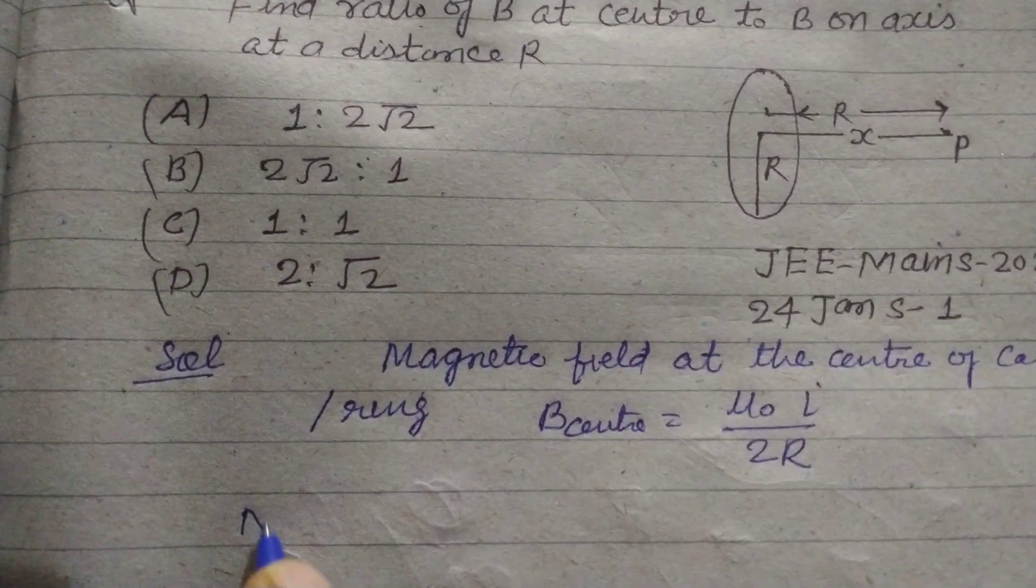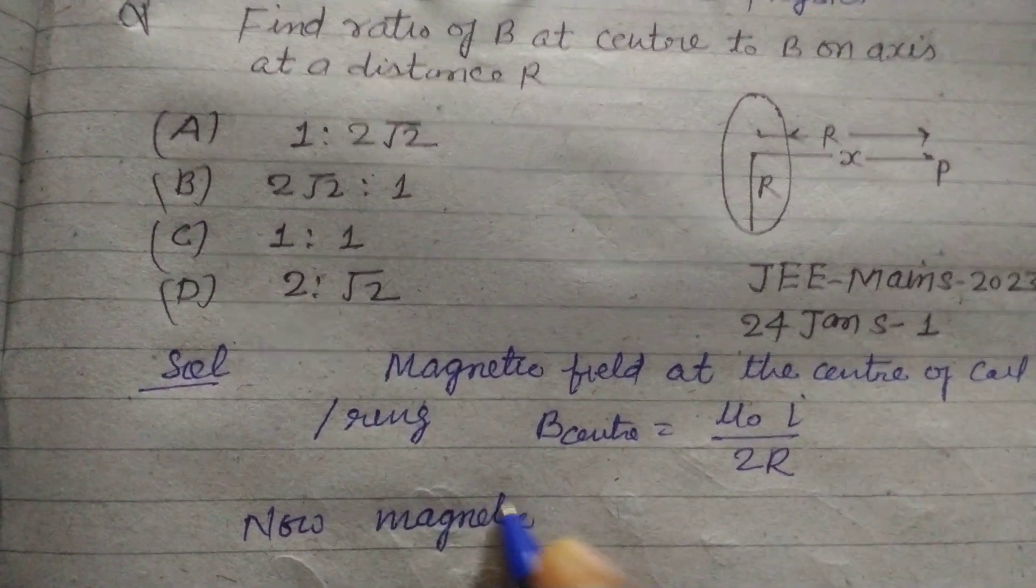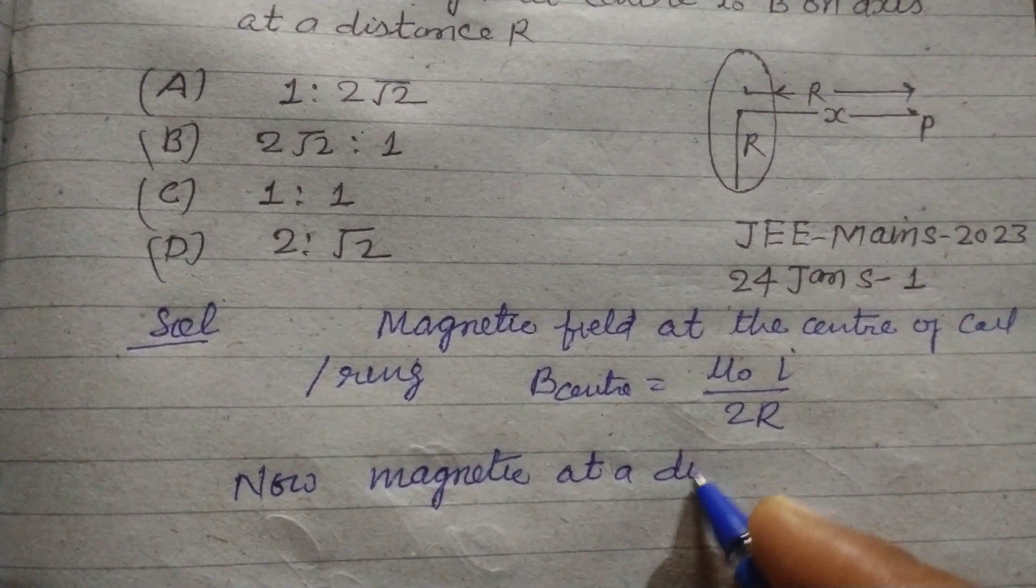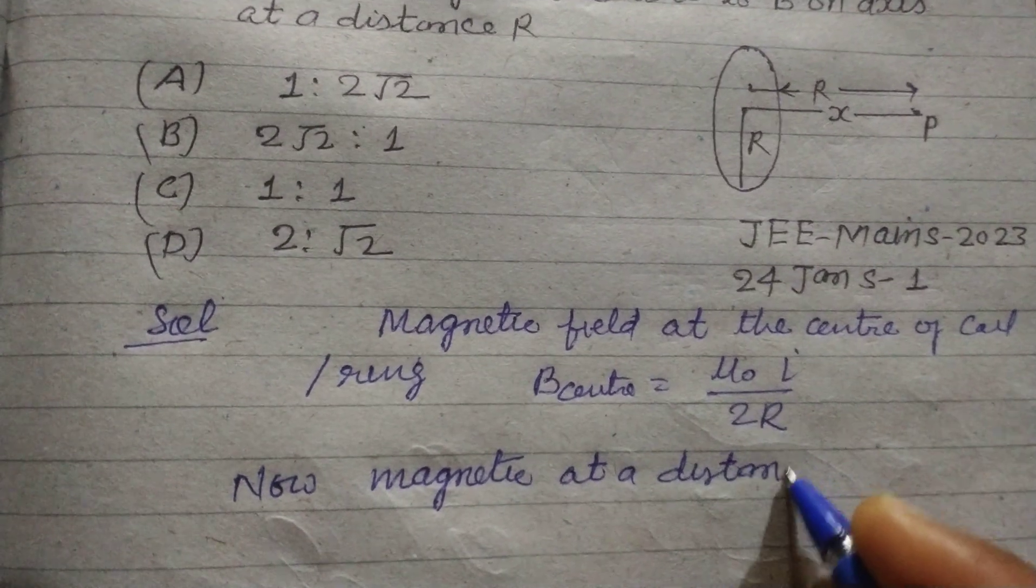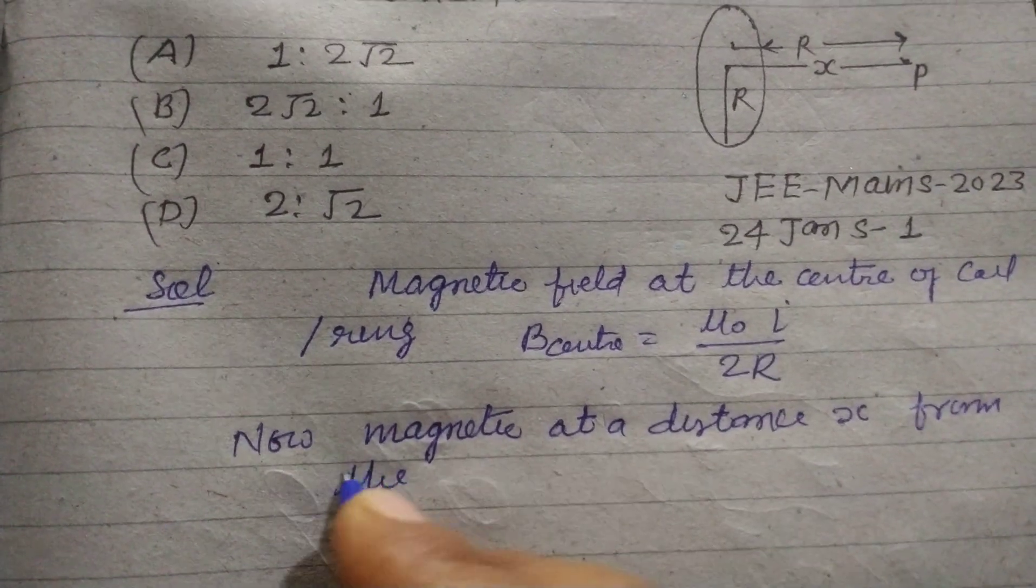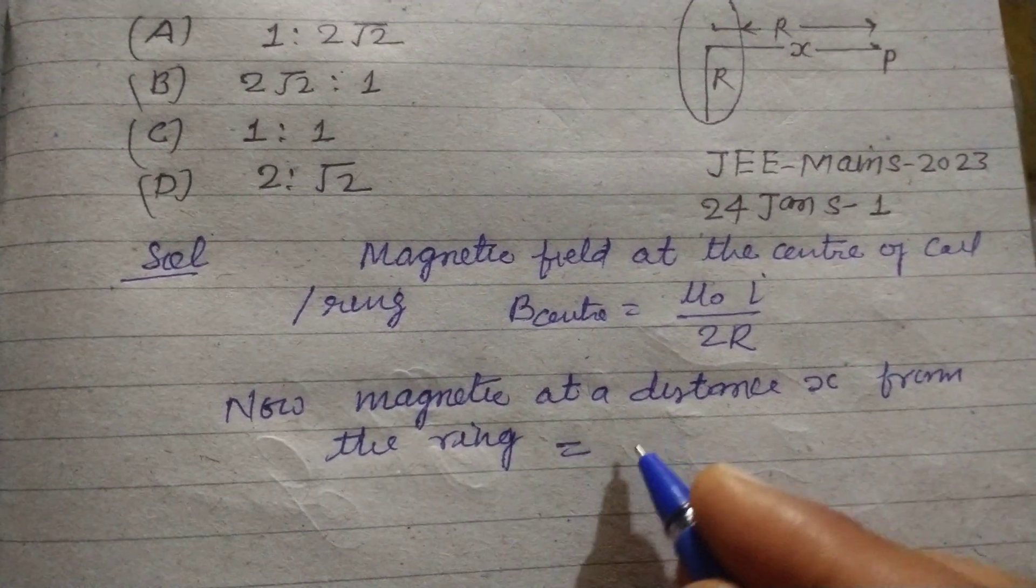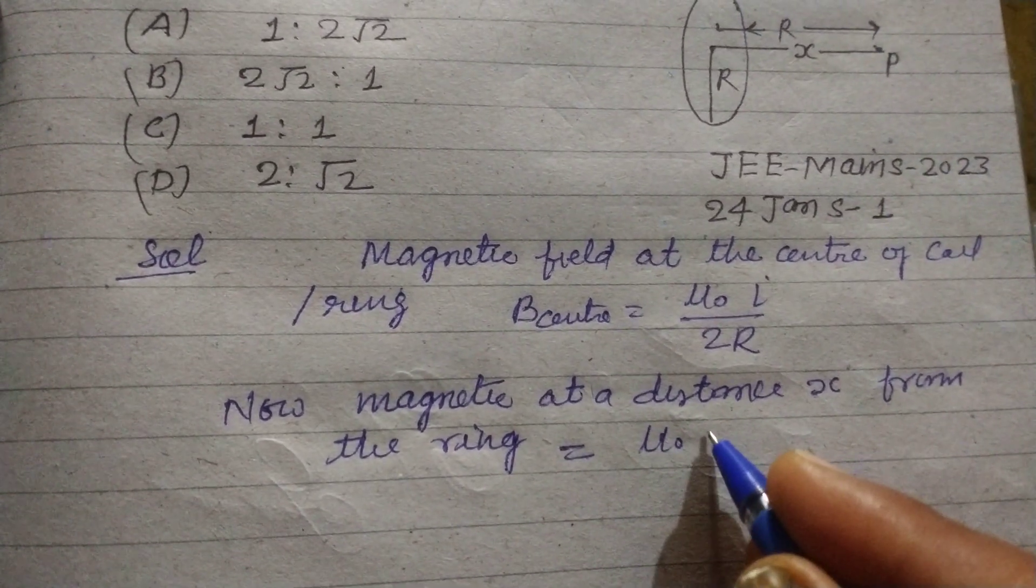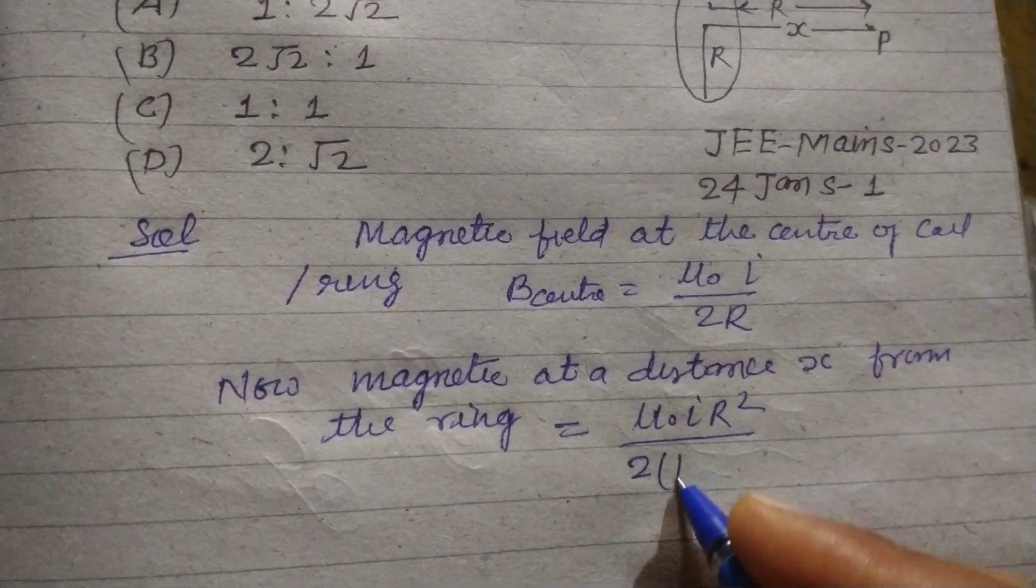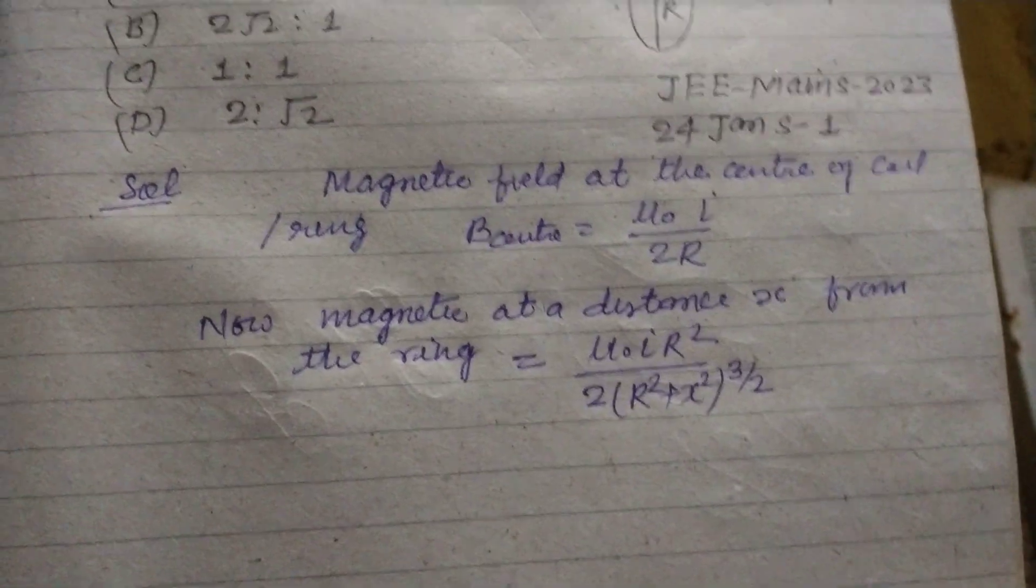Now magnetic field at a distance X from the ring will be μ₀I times R squared upon 2 times (R squared plus X squared) to the power 3 by 2. So these are the formulas.